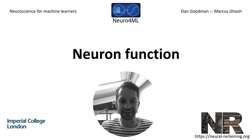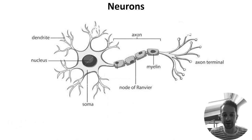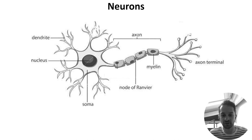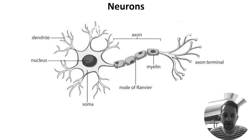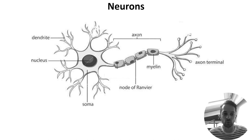In the last video we covered neuron structure and I mentioned that neurons act as information processing units. To do so, they use both chemical and electrical signals. Neurons receive chemical input signals known as neurotransmitters at their dendrites, transform this into an electrical signal, and then output their own neurotransmitters to other neurons via their axon terminals. We'll cover chemical signaling next week and focus on the electrical part today.